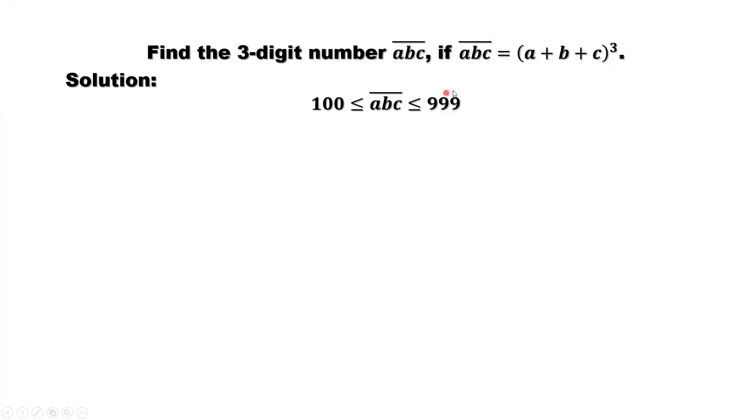For the given condition, ABC equals the sum of all its digits A plus B plus C to the power 3.